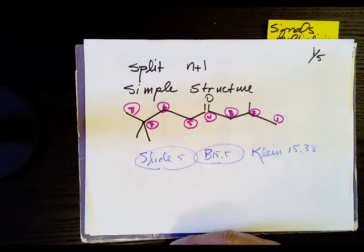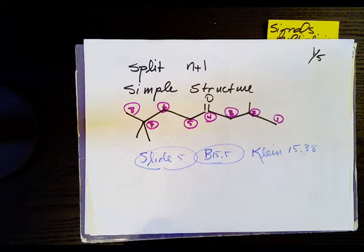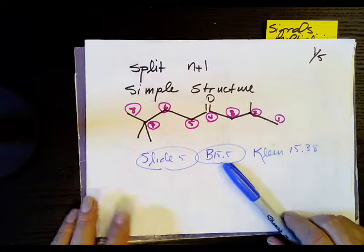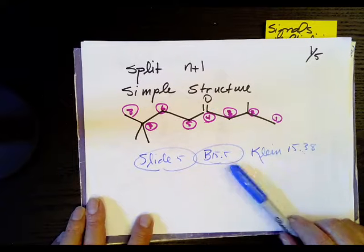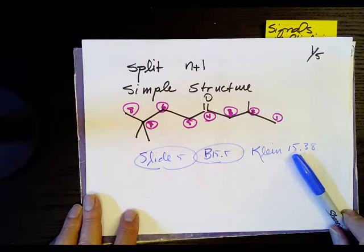Okay, one of the questions was how to see multiplicity or if the signal goes to singlet, a doublet, a triplet, etc. And this came from slide number five. The homework number was 15.5 and it's the same as Professor Klein's 15.38.